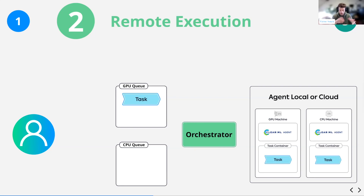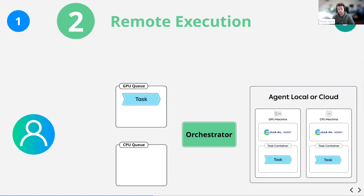The orchestrator puts tasks on those machines and tracks which task is running where. Each machine spins up a Docker container — not required but usually the best idea — installs all the packages and code we saw before, applies uncommitted changes not already in git, and then runs the code again. Because the code still contains the ClearML experiment manager, the task reports back to the experiment manager just like any other experiment.